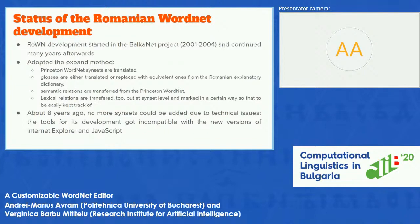The Romanian WordNet's development started in the Balkanet project between 2001 and 2004, and it adopted the expand method from the Princeton WordNet, where you take the Princeton graph, take the synsets, translate the definition, and import the relations and the literals.